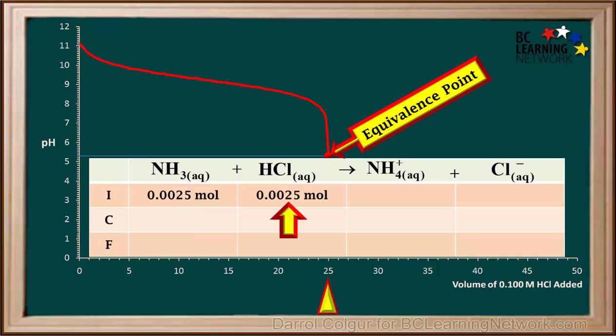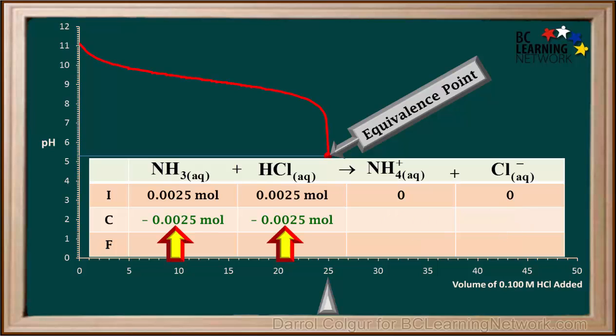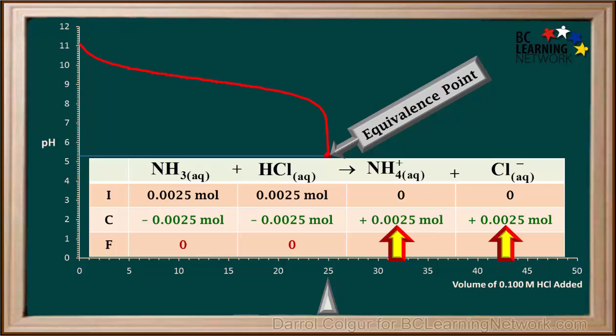At the equivalence point, we added 25 ml of 0.1 molar HCl, which is also 0.0025 moles. If we imagine a time just before the reaction starts, we have no products yet. HCl is a strong acid, so this reaction goes to completion. In the process, 0.0025 moles of both NH3 and HCl are consumed, and 0 moles of these two reactants remain. According to stoichiometry, if 0.0025 moles of NH3 and HCl react, 0.0025 moles of both NH4+ and Cl- will be formed.